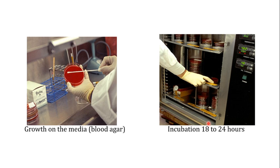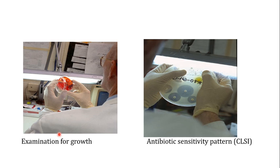After spreading the swab on blood agar media, you incubate it for 18 to 24 hours. This is usually sufficient to show growth in positive individuals. If there is no growth after 24 hours, you may give it an additional 24 hours to confirm. After incubation, you examine for growth, and if growth is observed on the blood agar media, you proceed to antibiotic sensitivity testing. In this test, you apply a plethora of antibiotic discs to the plate containing Streptococcus pyogenes to see which antibiotic best kills or inhibits the organism.